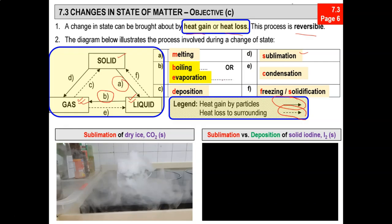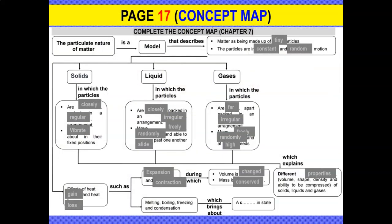Next, let's look at condensation. Condensation is essentially part E — the change in state from gas to liquid. And part F, freezing or solidification, is a change in state from liquid to a solid. I think you are quite familiar with freezing.